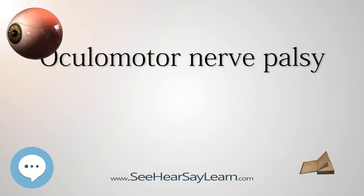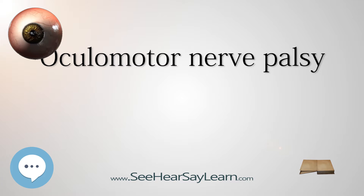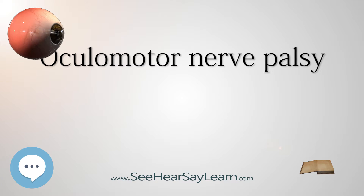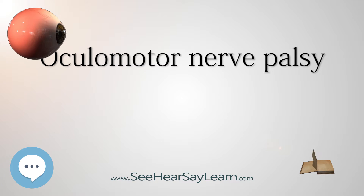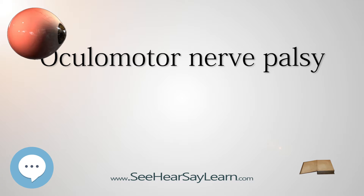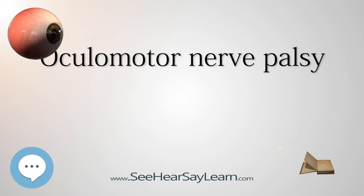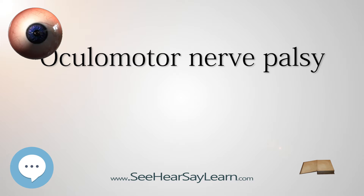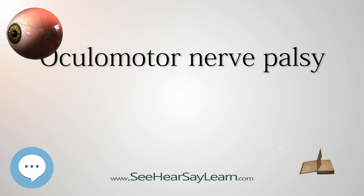Oculomotor palsy can arise from a number of different conditions. Non-traumatic, pupil-sparing oculomotor nerve palsies are often referred to as a medical third, while those affecting the pupil are known as a surgical third. Congenital oculomotor palsy: the origins of the vast majority of congenital oculomotor palsies are unknown, or idiopathic. There is some evidence of a familial tendency, particularly to a partial palsy involving the superior division of the nerve with an autosomal recessive inheritance. The condition can also result from aplasia or hypoplasia of one or more of the muscles supplied by the oculomotor nerve, or as a consequence of severe birth trauma.